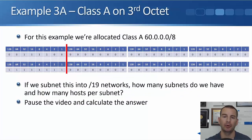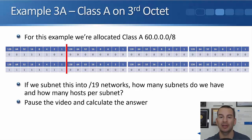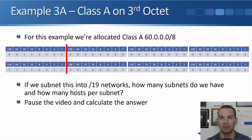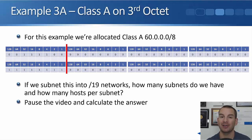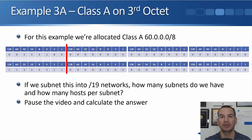Let's do another example. The previous example was a class A on the fourth octet. This time we're going to do a class A on the third octet, and this one can get a little bit confusing, so you might need to pay attention. In our example we've been allocated a class A 60.0.0.0/8. If we subnet it into /19 networks, how many subnets do we have and how many hosts per subnet? Pause the video and figure out the answer.